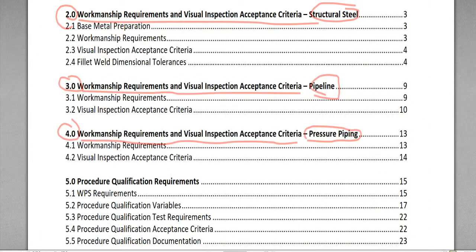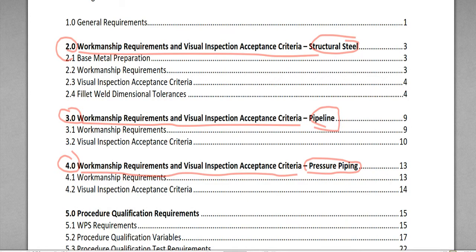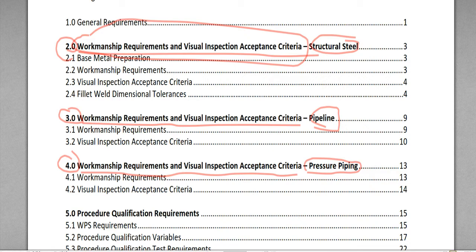When you look at chapters two, three, and four, the title is the same — Workmanship Requirements and Visual Inspection Acceptance Criteria — but the purpose of each chapter is different: Structural Steel, Pipeline, and Pressure Piping respectively.